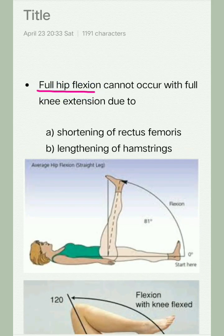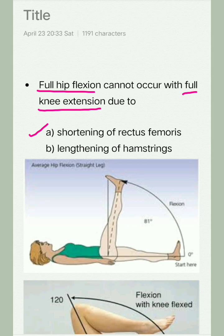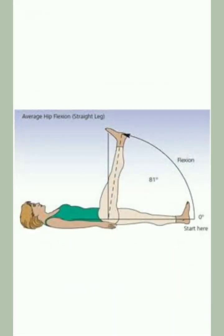Another example: full hip flexion cannot occur with full knee extension. Try it yourself and you will find you cannot do this. This is due to shortening of rectus femoris, which is active insufficiency, and lengthening of the hamstrings, which is passive insufficiency. This image shows hip flexion along with knee extension.